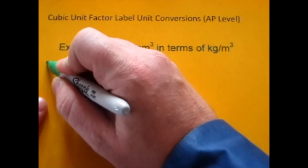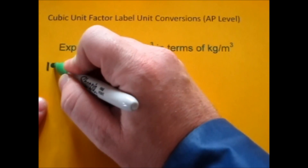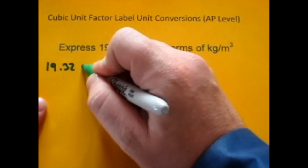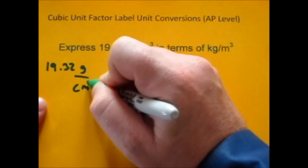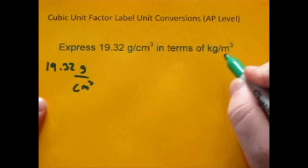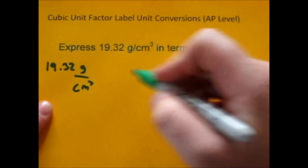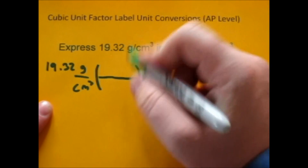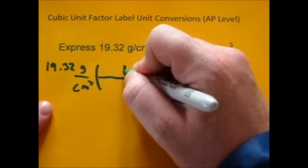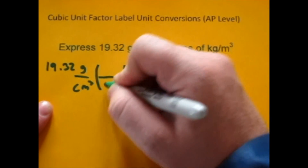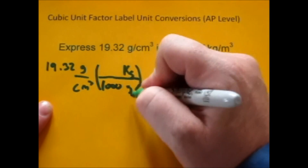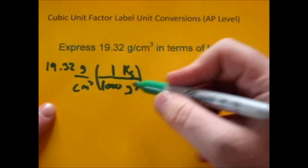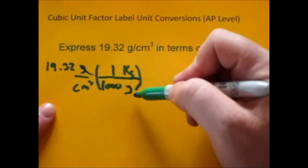We're going to start with 19.32 grams per centimeter cubed and convert it to kilograms per meter cubed. The first factor is just going to take care of the grams part and convert that over to kilograms. There are a thousand grams in one kilogram, so that takes care of that.